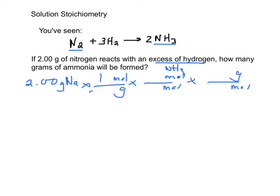So N2 is 28.02. The ratio is 2 to 1, so 2 to 1. And then ammonia weighs 17.04. This is ammonia we're getting to. And if you do that out, you find out it's 2.43 grams of ammonia.